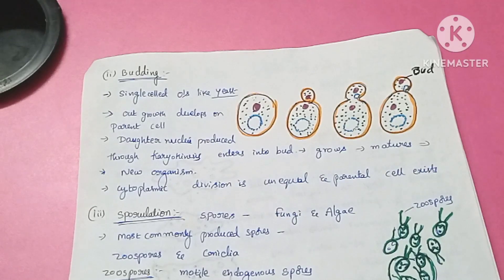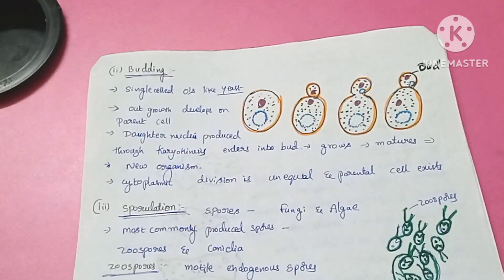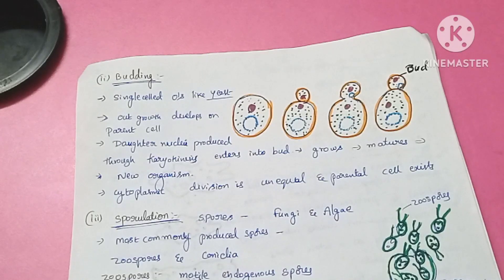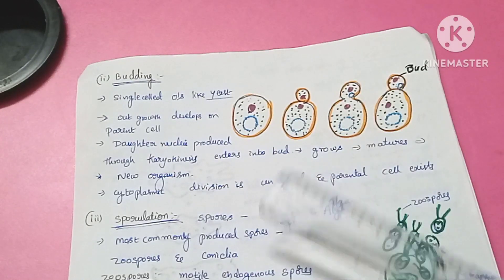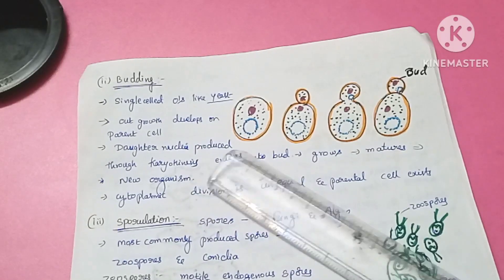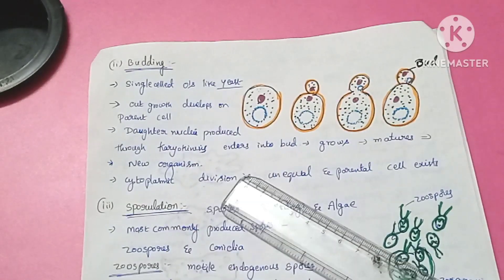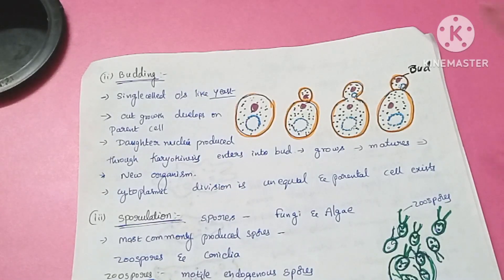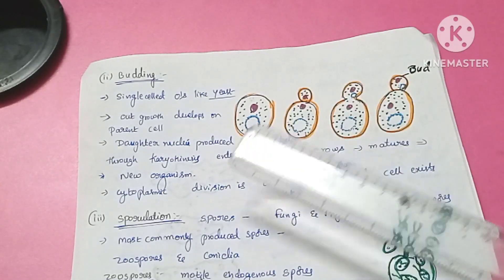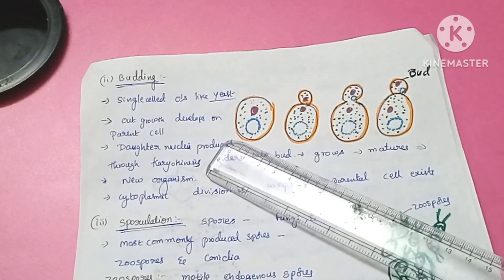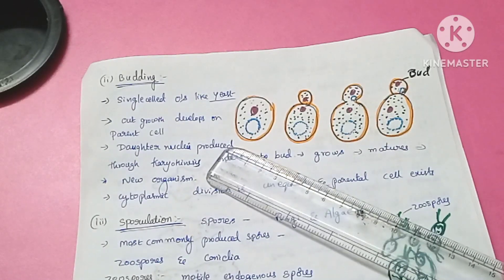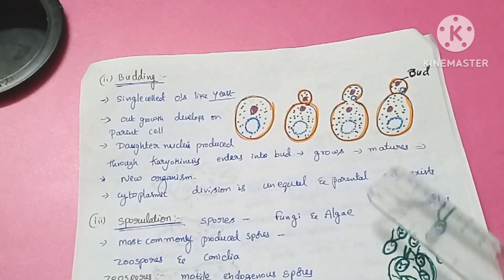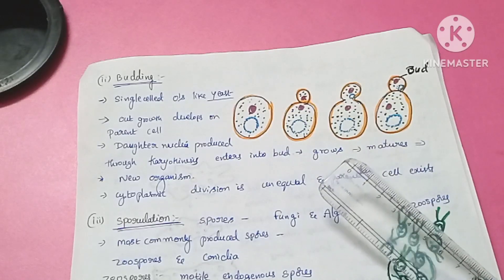Hello everyone, this is Latha Akula. In the last video we completed binary fission. In asexual reproduction, the first one is binary fission and the second one is budding. Budding occurs in single-celled organisms like yeast and other unicellular organisms.